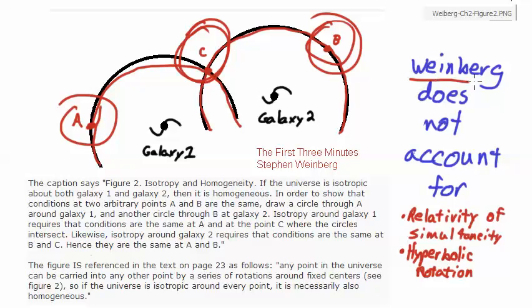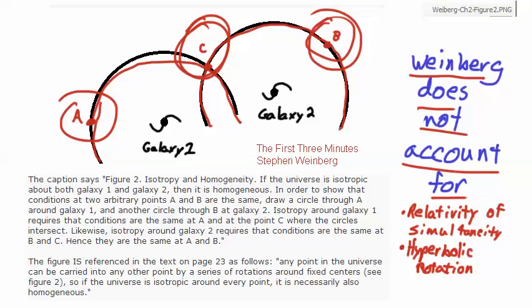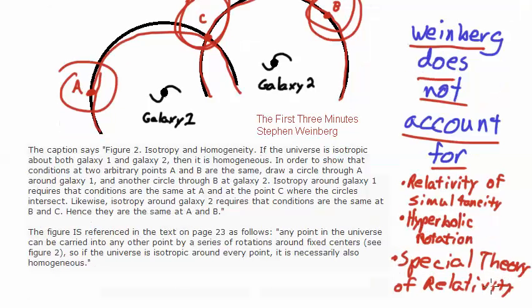Now it is my feeling that Weinberg does not account for the relativity of simultaneity. And though he mentions rotations, I think he is specifically meaning circular rotations, the commonly known trigonometric rotations. What he's not taking into account is hyperbolic rotation. In essence, in order to make this argument, Weinberg completely rejects the special theory of relativity.